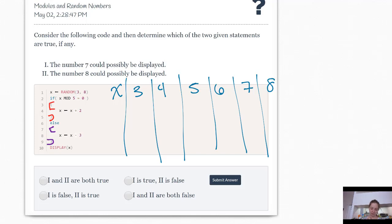So let's go through these one by one. Is 3 mod 5 equal to 0? Is 3 divided by 5 have a remainder of 0? No. So we're going to do what's in purple. And purple says take X and set that to X minus 3. So 3 minus 3 is 0, and what would display is 0.